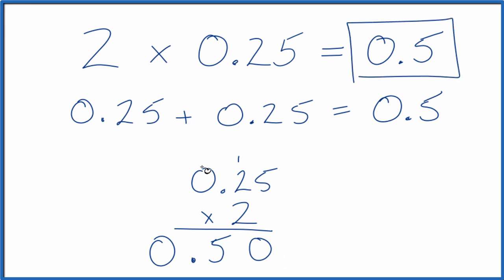This is Dr. B, multiplying 2 times 0.25. You get 0.5. Thanks for watching.